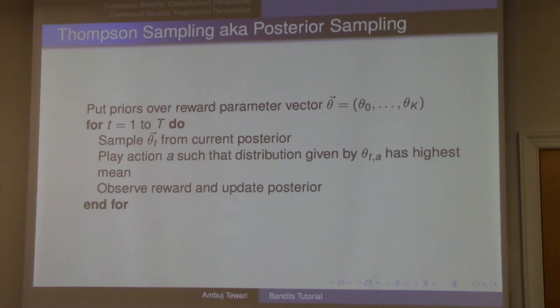What you do in Thompson sampling or posterior sampling is first of all you put some prior distribution over these parameters. Let's think parametrically. So let's assume that you are happy to believe that your distributions are in some parametric family. So you have your θ₀ to θₖ₋₁, one parameter per arm, and you put some prior distribution on this parameter.